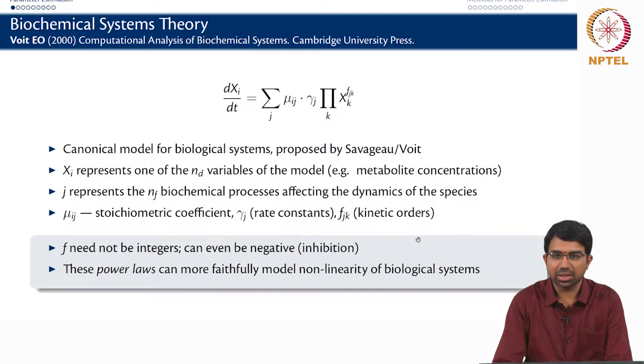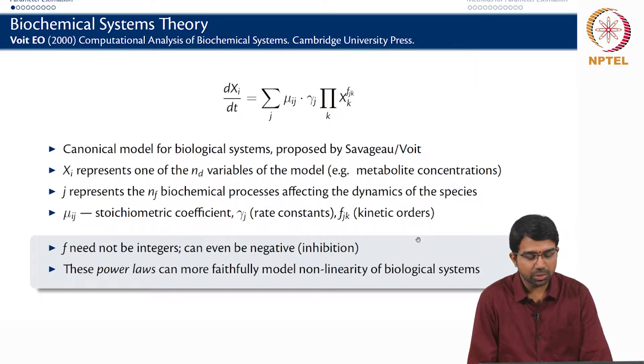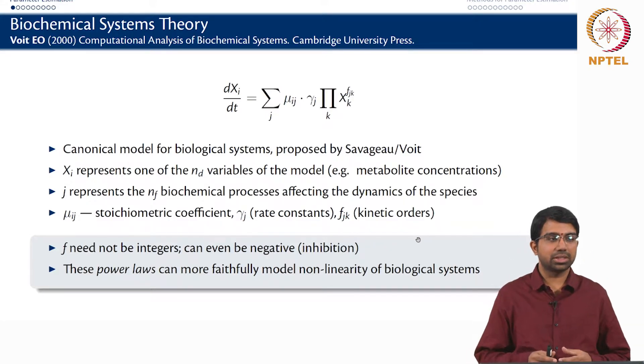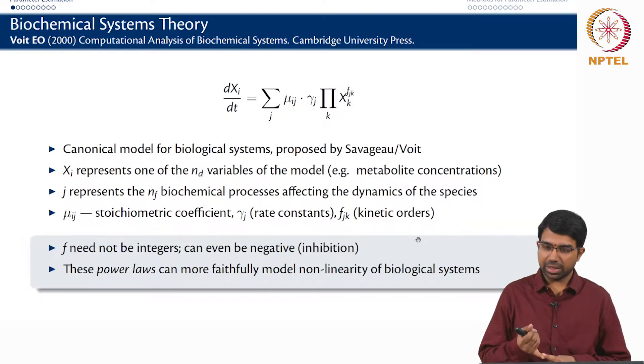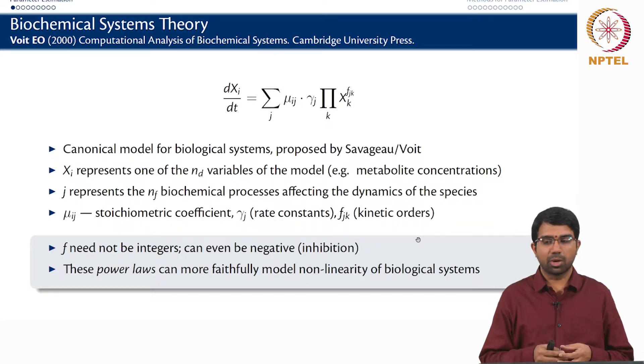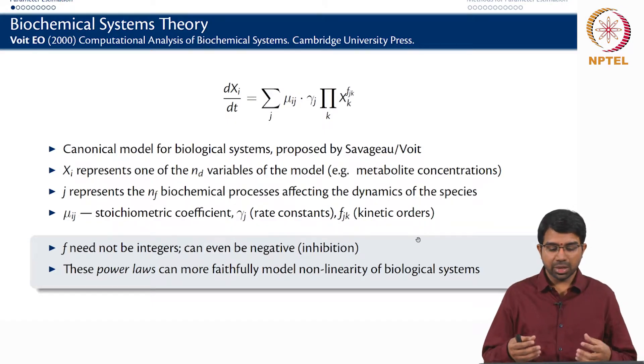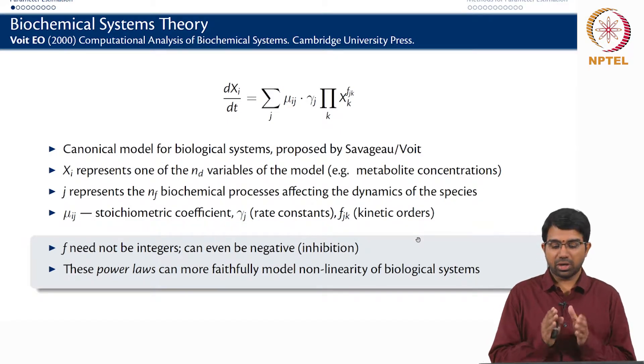There is also this classic field of study called biochemical systems theory which essentially tries to cast all the different kinds of models we studied yesterday. We briefly talked about Michaelis-Menten models, mass action models of course and your Hill kinetics and so on. It tries to cast all of these models with inhibition, without inhibition, with competitive inhibition and so on into differential equations which involve power laws.